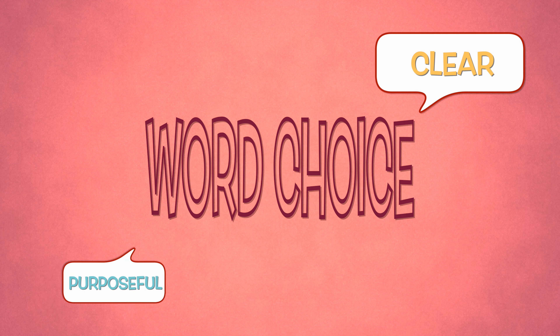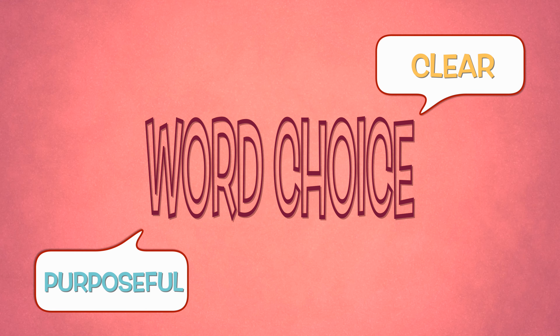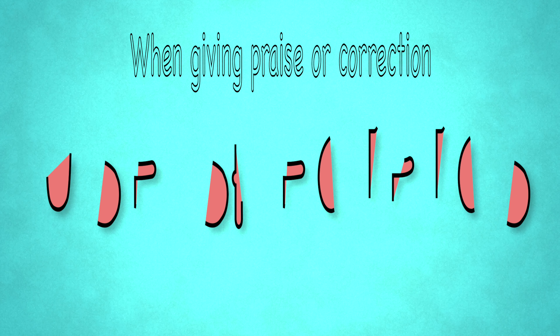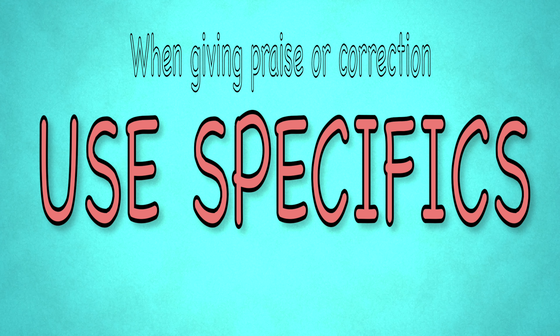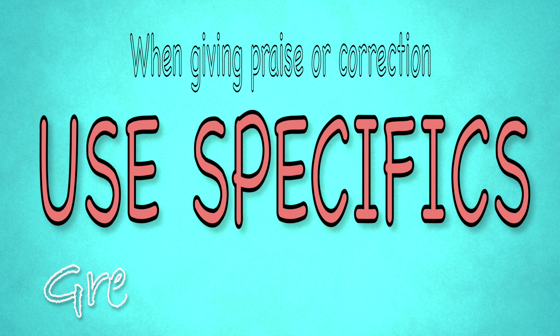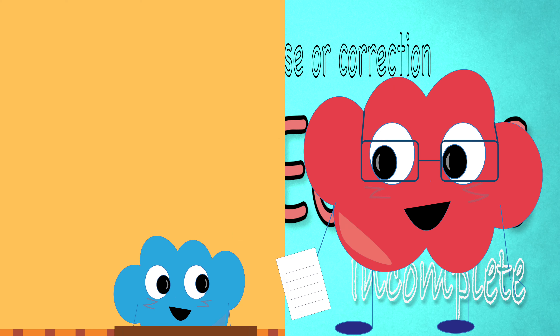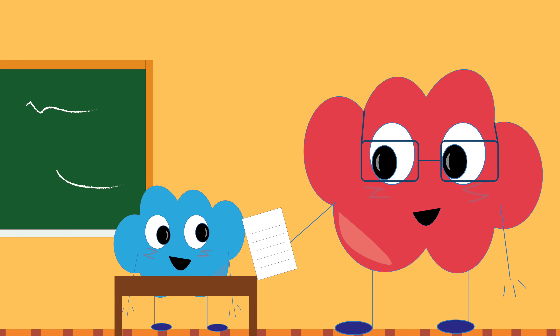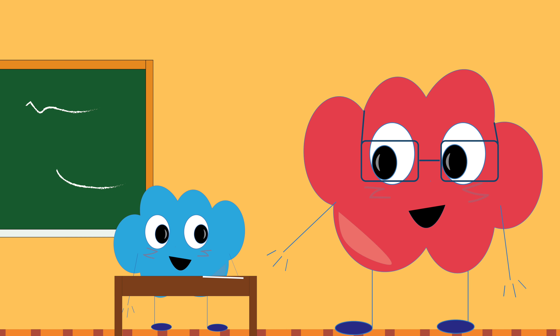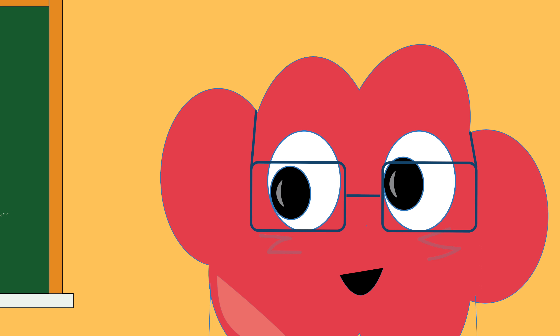Word choice. The words you use should be clear and purposeful so that students understand your message. When giving praise or correction, use specifics more than general adjectives such as 'great' or 'incomplete.' For example, you could say: 'I like the way you remembered to capitalize all the proper nouns in this essay. Next time, I need you to work on using the correct end punctuation for each sentence.'